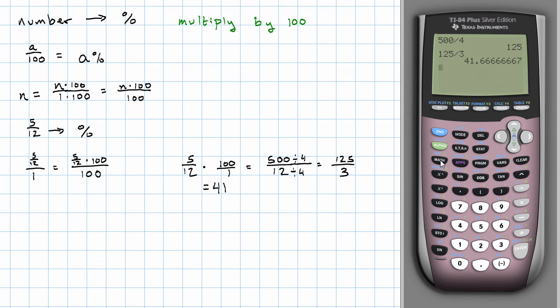And then to get a mixed number, I'll take the fraction part of my answer and convert it to a fraction. 41 and 2/3. So 5/12 equals 41 2/3%.